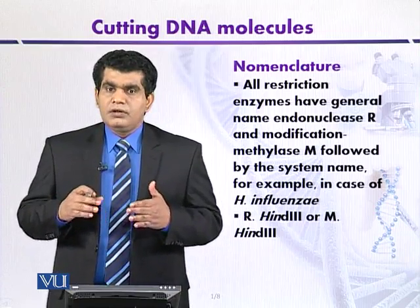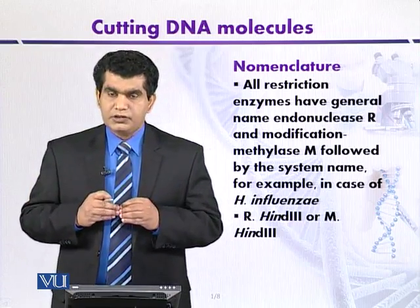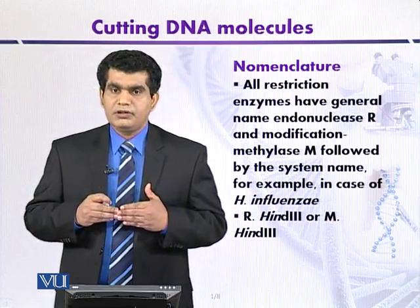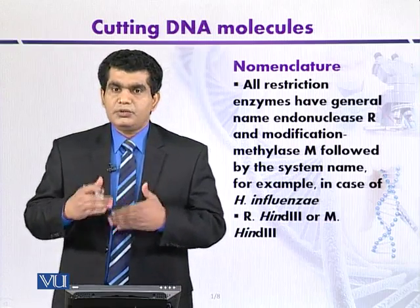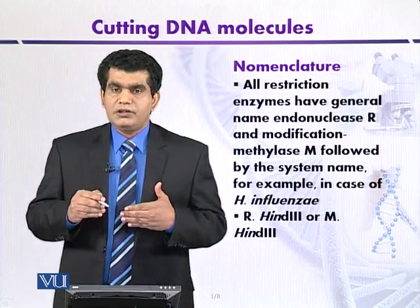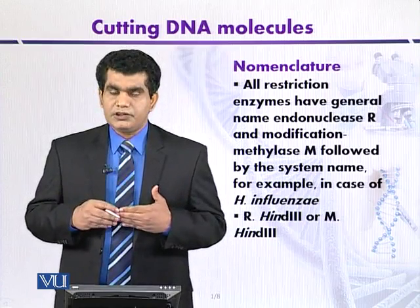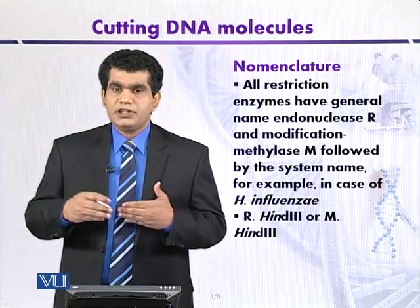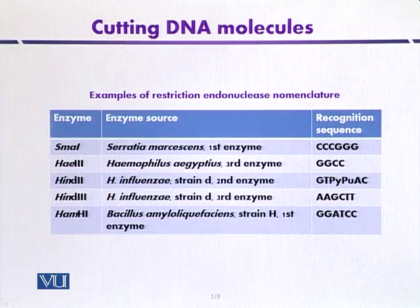Type 2 restriction enzymes may have separate enzymes for restriction and modification. To differentiate them, the letter R is added — for example, R·HinD III — to indicate the enzyme has restriction activity. If written as M·HinD III, it means the enzyme has methylation activity and plays a role in DNA modification.